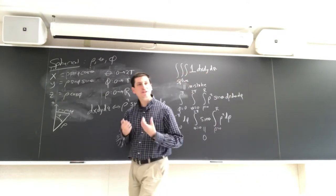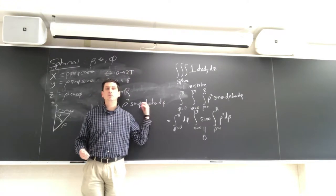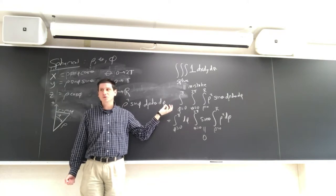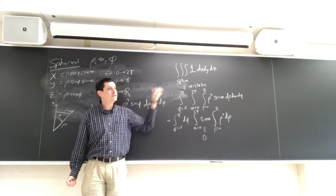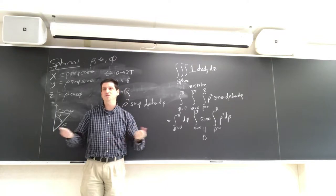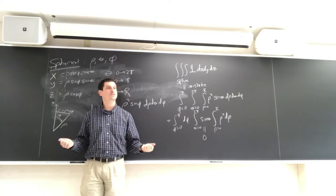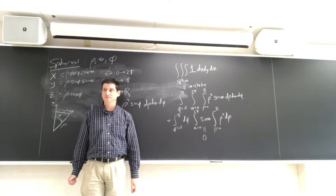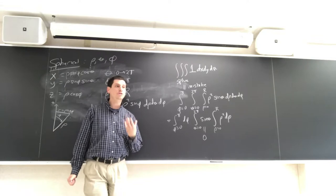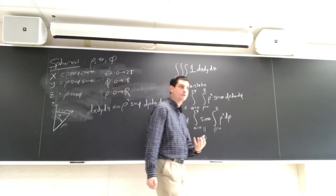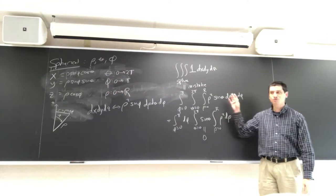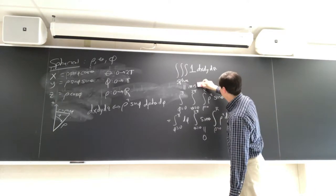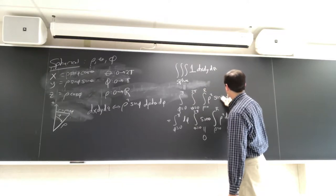If you only approximately remember something, you can figure out exactly what it is by testing it in a special case. I know it's either ρ² sine θ or ρ² sine φ. Let me calculate the volume of a sphere — I should get something positive, but I'm getting zero. So it's really good life advice: if you can test it in a special case, do so.